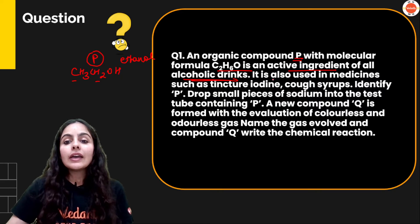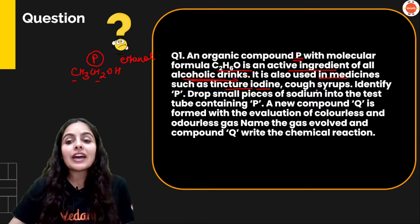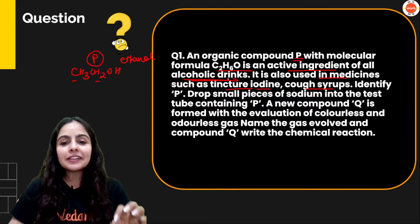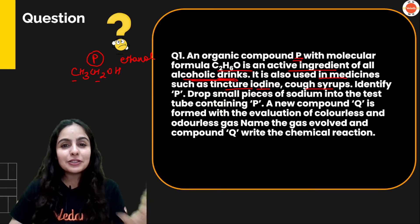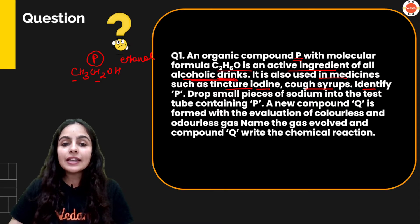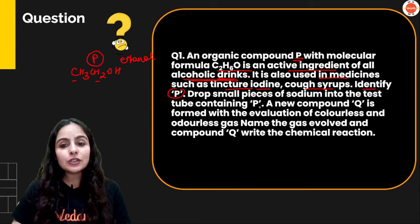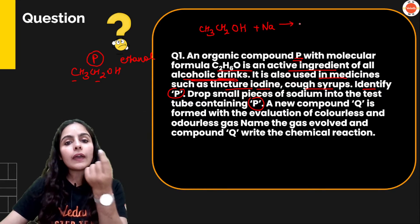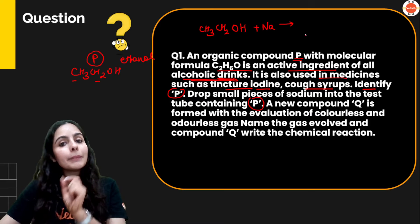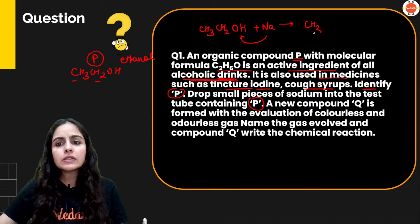It is also used in medicines such as tincture of iodine and cough syrup. Now, identify P. Ethanol. Drop small pieces of sodium into the test tube containing P. Agar ham CH3CH2OH ke andar sodium add kar de, alcohol ka ek aisa chemical property jaha pe ye metal ke saath react karta hai. It will displace hydrogen. Kya banayega?